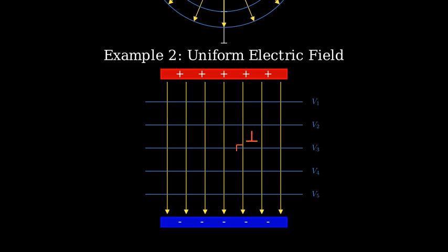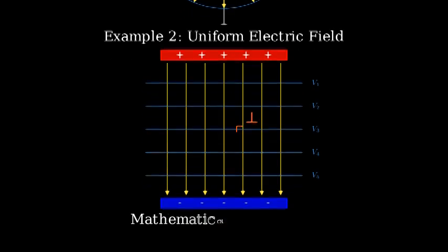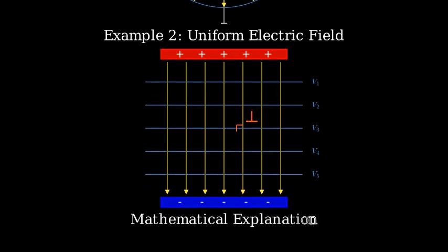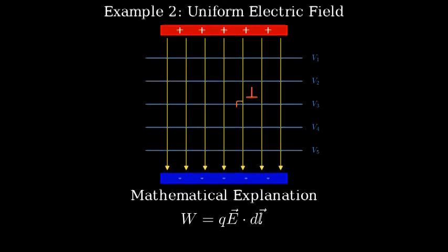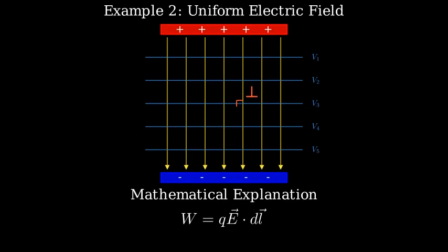This perpendicularity is because the electric field points in the direction of maximum decrease in potential. Now, let's understand this mathematically. The work done in moving a charge in an electric field is given by the formula: W equals Q times E dot dL, where Q is the charge, E is the electric field, and dL is the displacement vector.